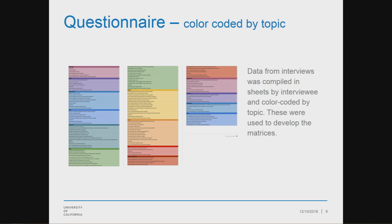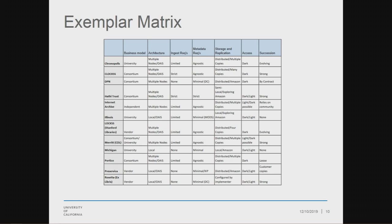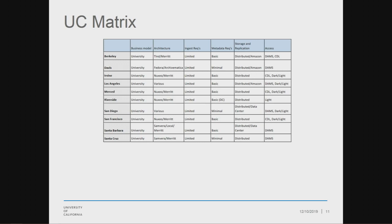We used these sheets to create what we call our matrices — the boiled-down version. These are in the report, so you can see them there. We distilled those 80 questions and all 22 interviews into these simple exemplar matrices. We did one for the UCs as well. The response data is really simplified in these matrices, but they tell the story of what we were hearing and allow us to compare and analyze what we saw across the exemplars and across the UCs. We identified trends, observed the gaps, and confirmed some assumptions about where we are in digital preservation as a community.